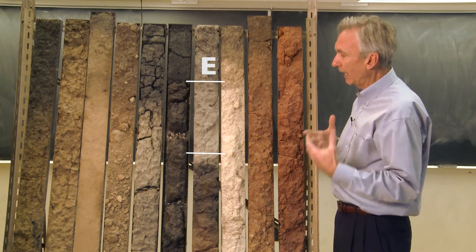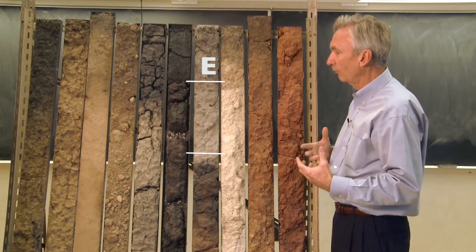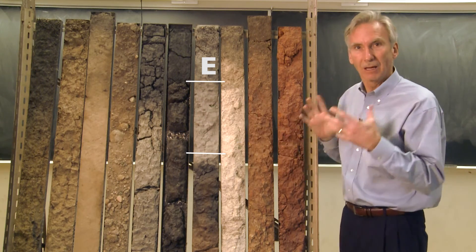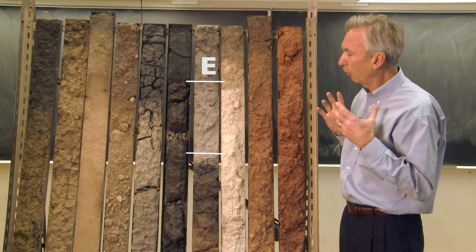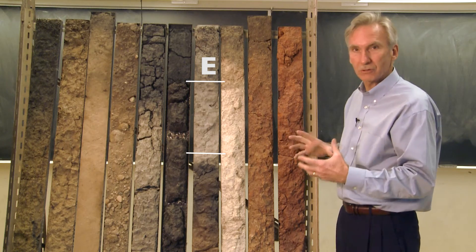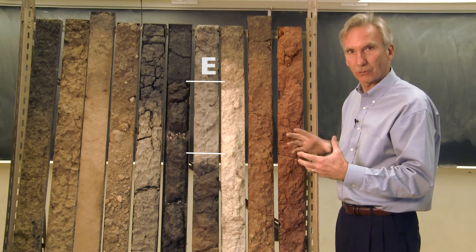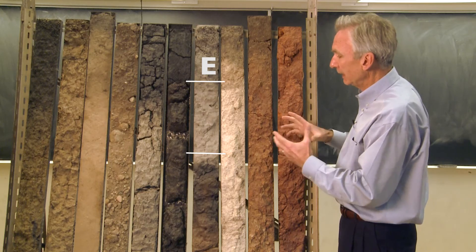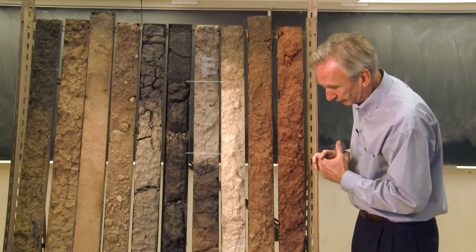All the clay and the iron and so forth have been removed, and what's left behind is a very white sort of appearance to that soil horizon. That's called the E horizon.